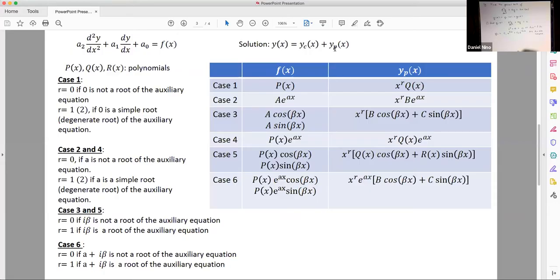Now, to find the particular solution, we need to look at what form our term on the right has. In this case, the term on the right was given by sine 2x, which satisfies case 3 in this form, where b is equal to zero because we don't have a cosine term.